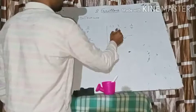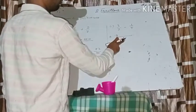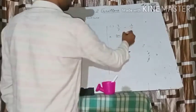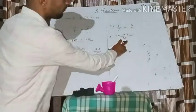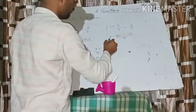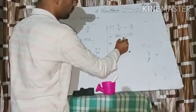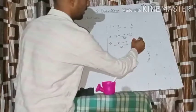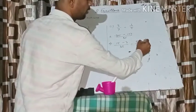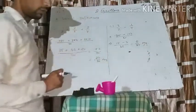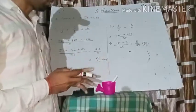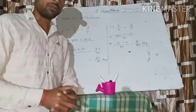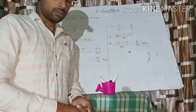For the subtraction question, the LCM of seven and five is 35. Divide 35 by 7 to get 5, and multiply by 3 to give 15. Divide 35 by 5 to get 7 — write the minus sign and multiply: 7×1=7. So it becomes 15 minus 7 upon 35, which equals 8 upon 35. That's your answer. Today we discussed types of fractions, comparison of fractions, and sum and difference of fractions. Thank you.